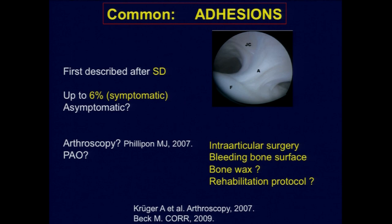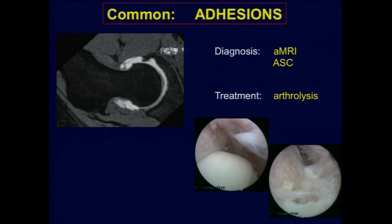Risk factors include intra-articular surgery of course. If you have a bleeding bone surface, which you have when you correct the offset on the femoral neck — the use of bone wax was also incriminated — and the rehabilitation protocol; we are much more aggressive today than we were a few years ago. Now, if you have a patient having impingement symptoms after the surgery, you have to look at the x-ray pictures, make sure you did all the corrections perfectly, and if you have no explanation, do a new arthro-MRI. You can find such adhesions around the femoral neck.